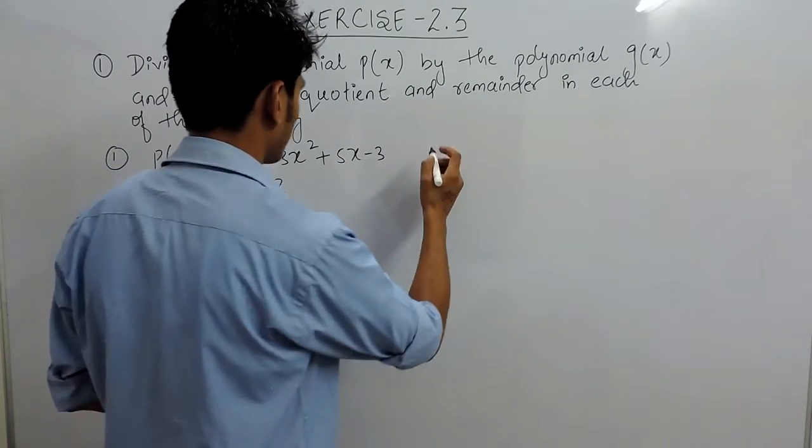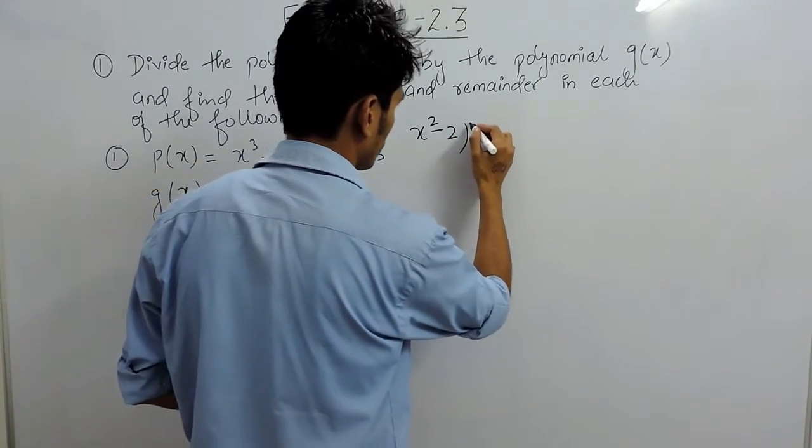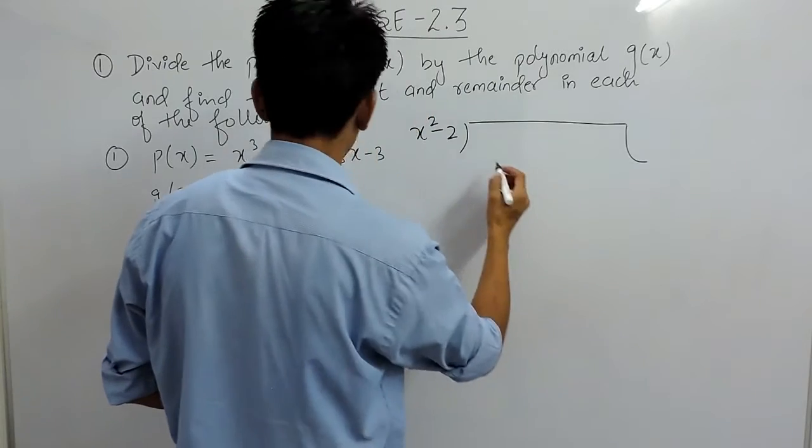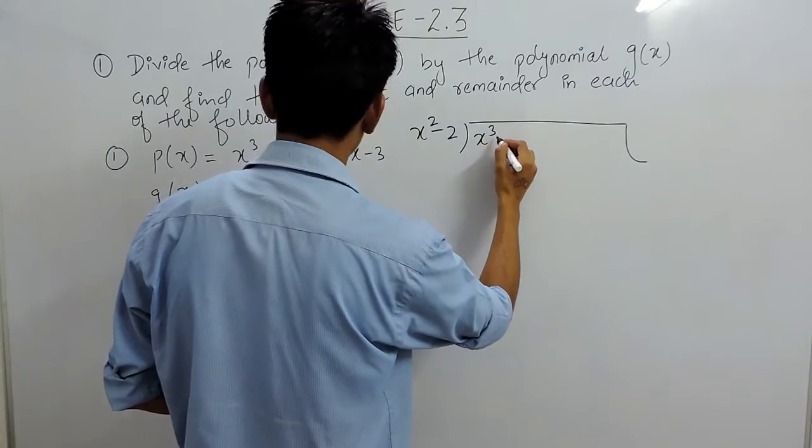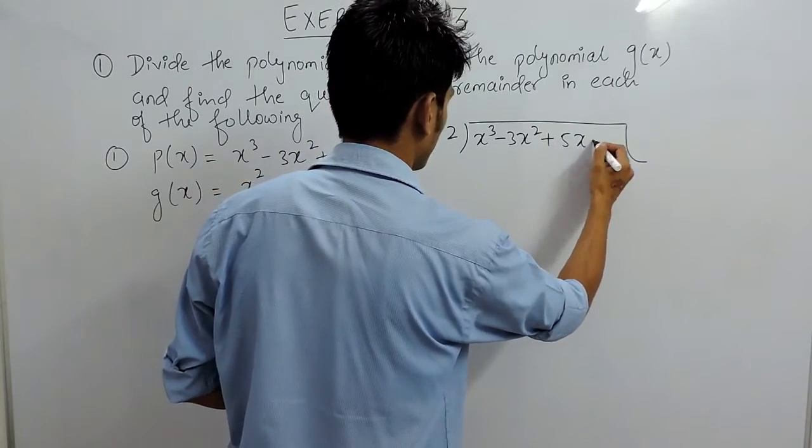Okay, let's divide. Here it is: x cubed minus 3x squared plus 5x minus 3, divided by x squared minus 2.